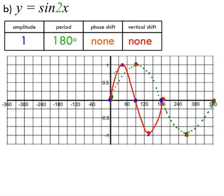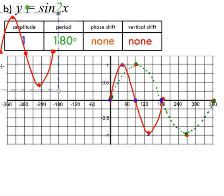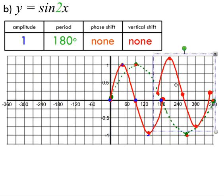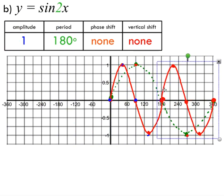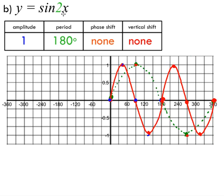We're going to have two full cycles in 360 degrees, so we duplicate this cycle. You can see this thing continues and ends at 360 degrees just as the original period would. That's our transformed sine graph.